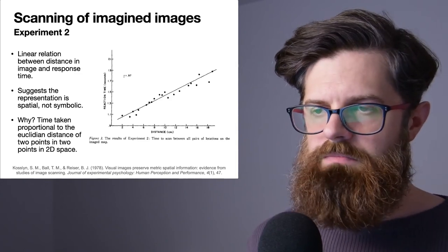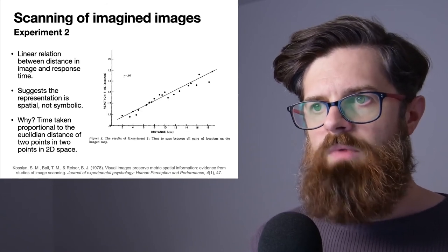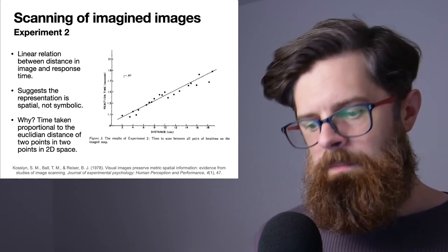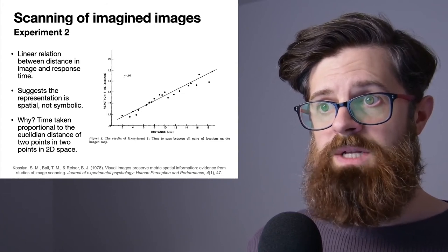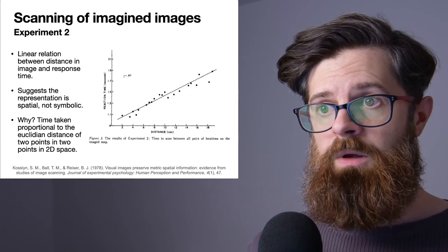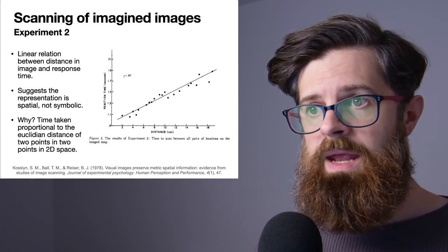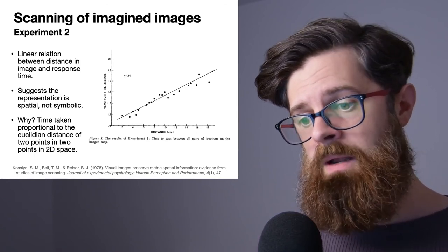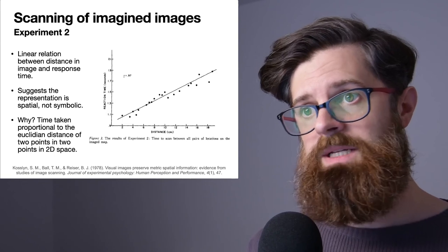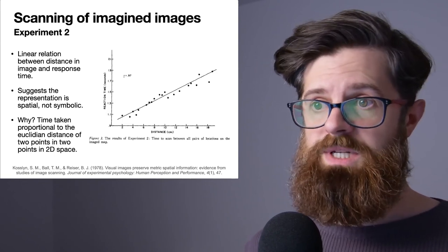I don't see how you could get more image-like than a two dimensional representation, and so it makes sense if the person's representation is pictorial, image-like, then you would have this linear relationship between the amount of time it takes to mentally simulate this black dot going different distances.